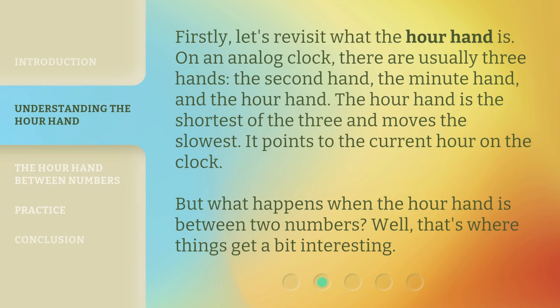Firstly, let's revisit what the hour hand is. On an analog clock, there are usually three hands: the second hand, the minute hand, and the hour hand.